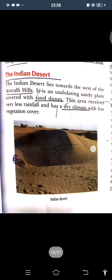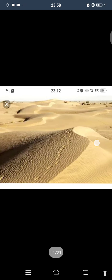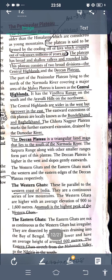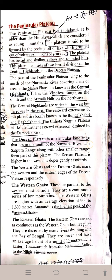We have already read about the Indian desert. This Indian desert lies to the west of the Aravalli hills. It is an undulated sandy plain covered with sand dunes. This area receives very less rainfall and has a dry climate with low vegetation cover. Now, the Peninsular Plateau is a tableland. The plateau is said to be formed by the cooling of lava which erupted from volcanoes millions of years ago. These highlands are divided into the Central Highlands and the Deccan Plateau. The Deccan Plateau is a triangular landmass, divided by the Western Ghats and Eastern Ghats.